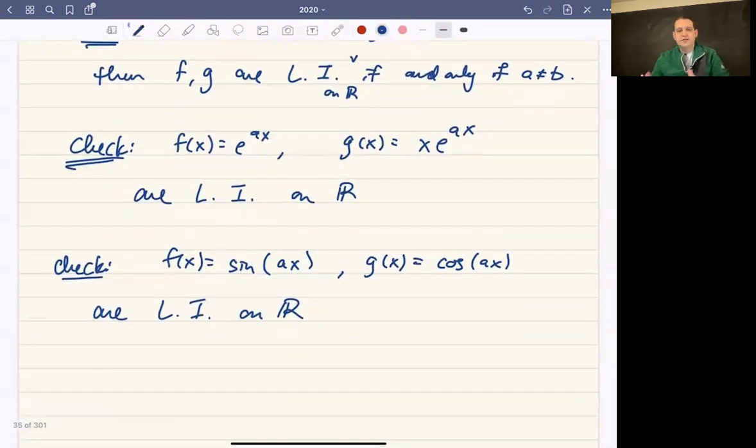Okay, so if you just compute the Wronskian, you get that all of these quantities - the Wronskian of all these quantities is not identically zero. That means that they are all going to be linearly independent on R.